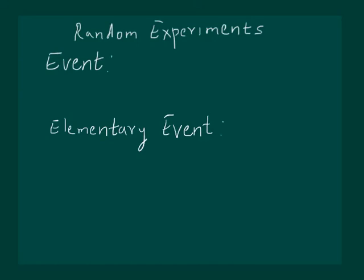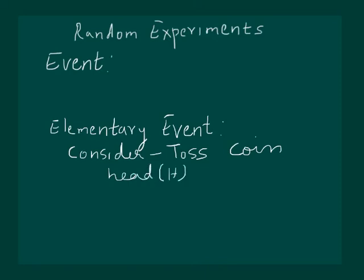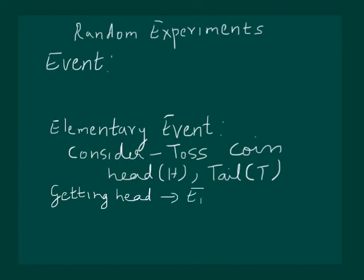That means, consider we toss a coin. Then what all outcomes are possible? We can either get a head, let us denote it by H, or we can get a tail, let us denote it by T. Then we define getting head as one elementary event, say E1, denoted by E1. And getting a tail is another elementary event which can be denoted by E2.